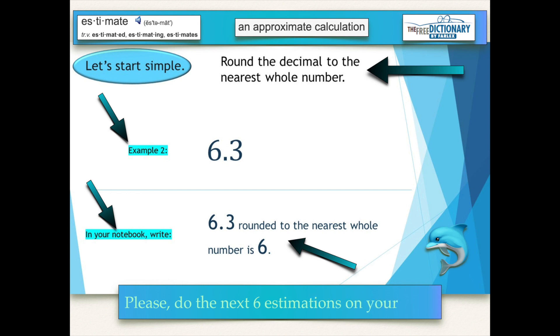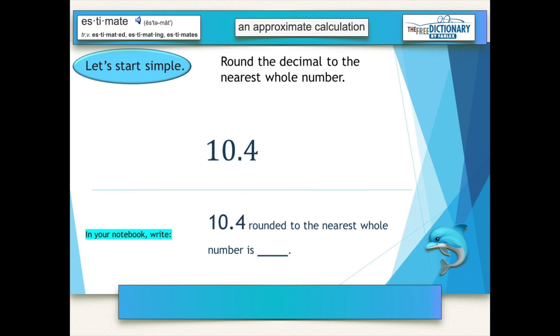So please do the next 6 estimations on your own, using whatever assistance I give you. Please round 10 and 4 tenths to the nearest whole number. This little clue at the bottom here is going to be on every single page. Please get that memorized. It makes rounding very simple. There's five numbers that you round down for, and five numbers that you round up with.